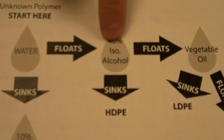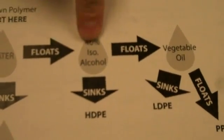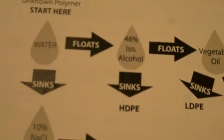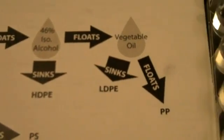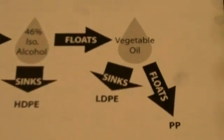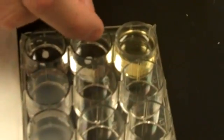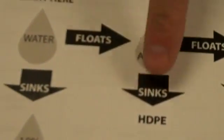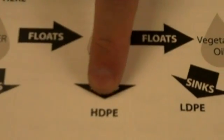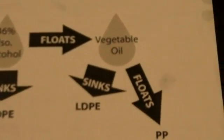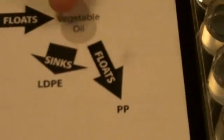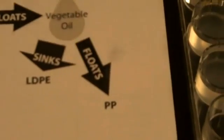Since it floats, we can follow our flow chart. If it floats, we then move on to the isopropyl alcohol and see if it floats or sinks again. We're taking a different sample and putting it in the isopropyl alcohol, and it's sunk right to the bottom. That tells us that the polymer we have here is HDPE. If it had floated, we would have moved over to the vegetable oil to test whether it was LDPE or PP.